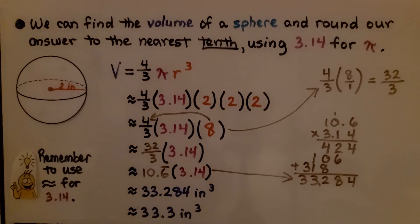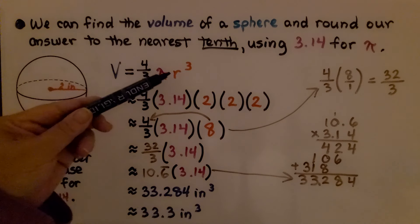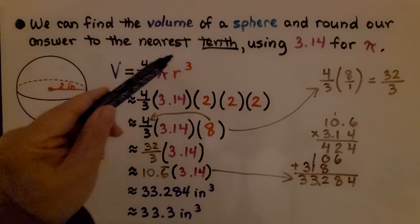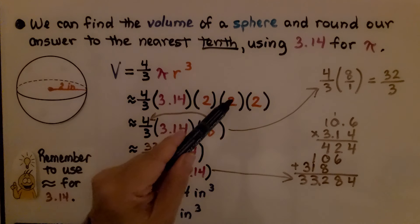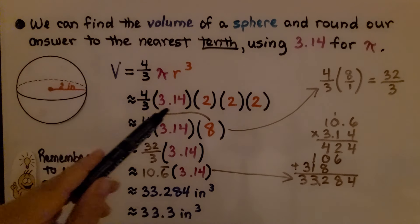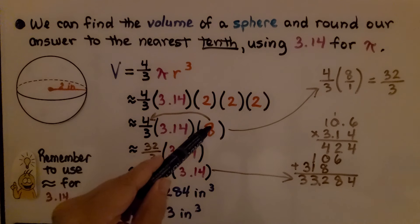We can find the volume of a sphere and round our answer to the nearest tenth using 3.14 for pi. Here we have a sphere and it's telling us that the radius is 2 inches. We substitute it into our formula. If we have the radius cubed, that means we're going to have 2 times 2 times 2. We can multiply these together and get an 8.